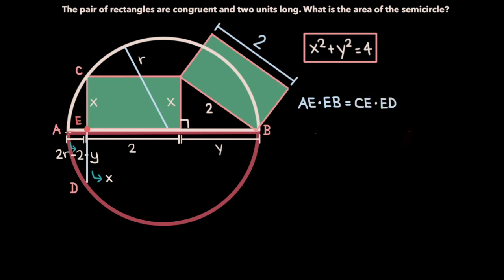So in other words, this length times this length is equal to this length times this length. We know that AE is 2R minus 2 minus y, and that EB is 2 plus y, and that the product of these two expressions is equal to CE times ED, which is also x, so x times x, which is x squared.